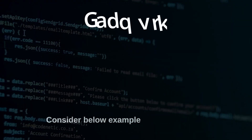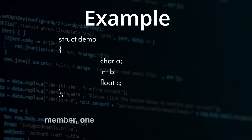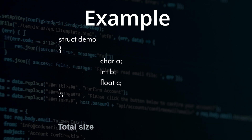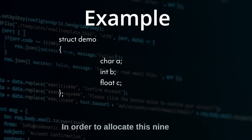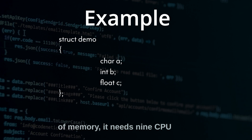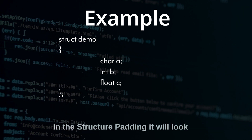Consider this example where I have one character member, one integer member, and one float member. The total size of this structure without structure padding is nine bytes. In order to allocate these nine bytes of memory it needs nine CPU cycles. To avoid this problem, the structure padding concept has been introduced.